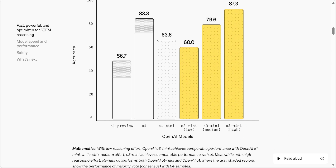Then we have O3 Mini Medium, which is a balanced version available for default and free users. And O3 Mini High, which they claim to be the absolutely best model, but it takes longer to think. My assumption is that they're coming up with an answer for DeepSeek R1, because they want to compete and they know DeepSeek is creating chaos on the internet.